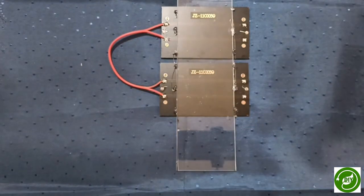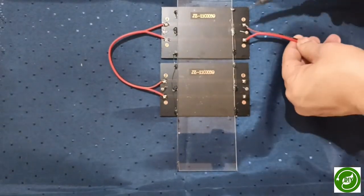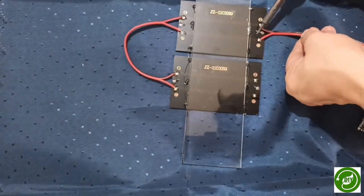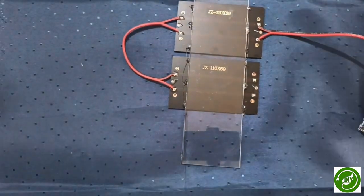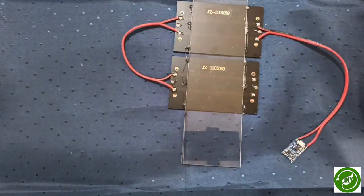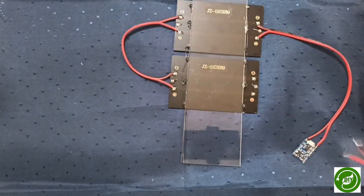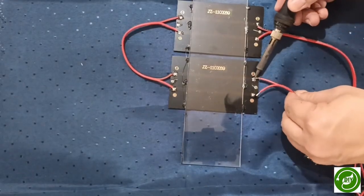Connect the lithium battery charger module to the mini solar panels. Next, connect the LED voltage meter to the solar panels to observe the voltage output.